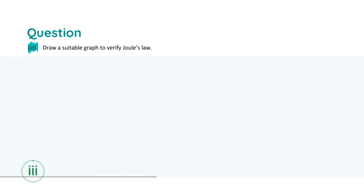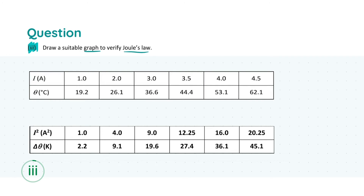For part A(iii), we need to draw a suitable graph that verifies Joule's law. We're given a table of information, and we need to make some changes to it. The key change is that we need to square the current — each value of I gets squared — to get it into a form we can use. We also find the change in temperature, delta theta, by subtracting the initial temperature from the final temperature. We then plot I-squared versus delta theta.